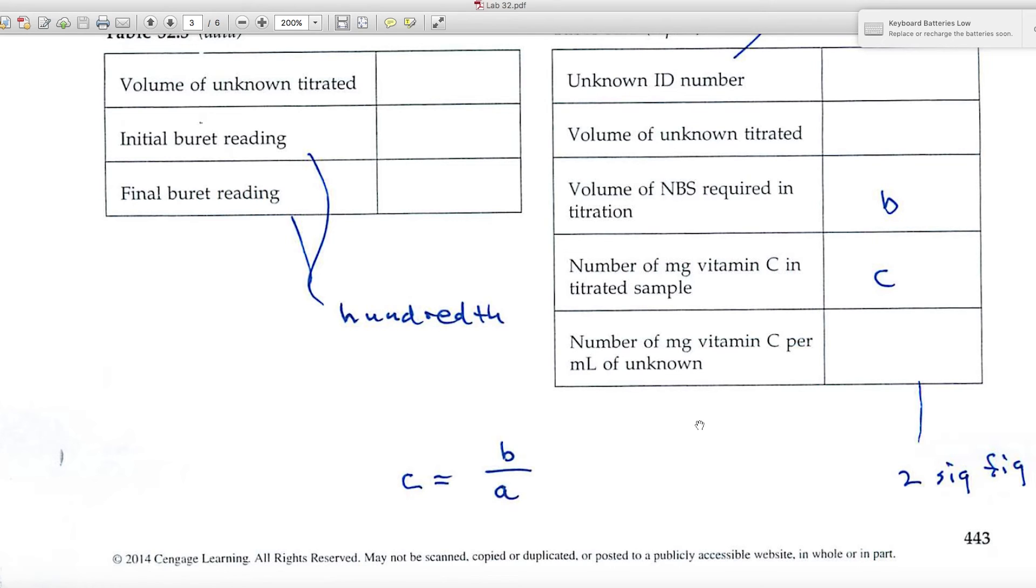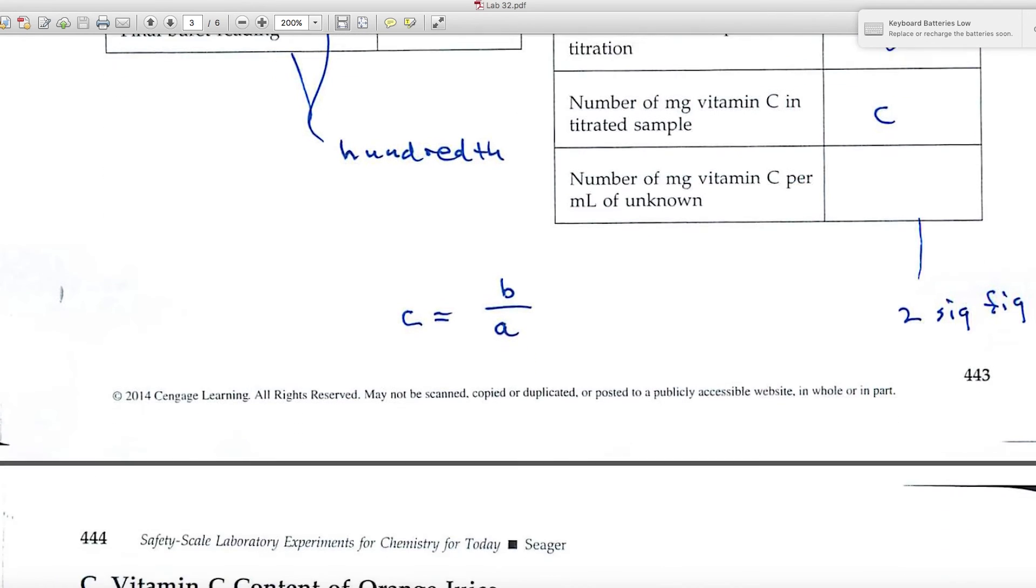For calculating that value of c, it's equal to b divided by the a that we had in our first bit of data. And again, it should be expressed to two significant figures. So this little calculation is one that you'll do all the way through the experiment using that value of a.